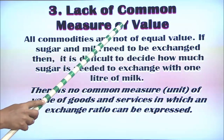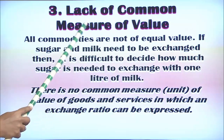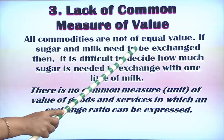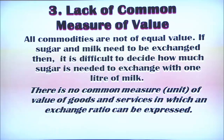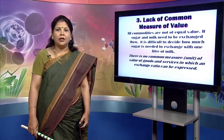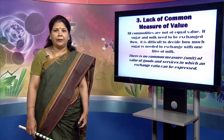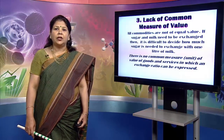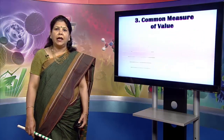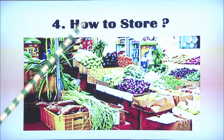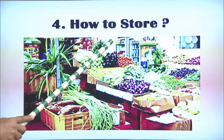The third problem with the barter system was the lack of a common measure of value. All commodities are not of equal value. If sugar and milk need to be exchanged, it is difficult to decide how much sugar is needed for one liter of milk. There is no common measure or unit of value in which an exchange ratio can be expressed, and so this creates a problem with the barter system.